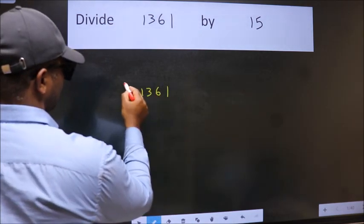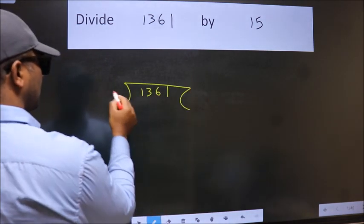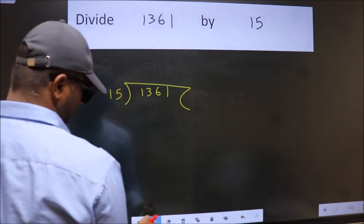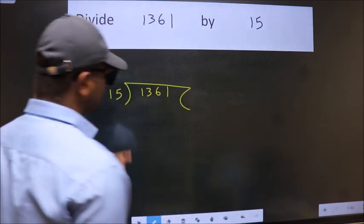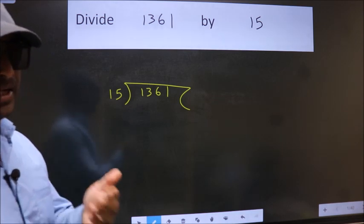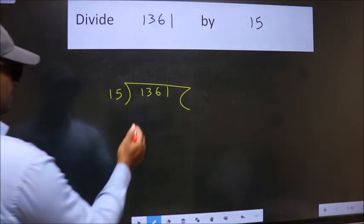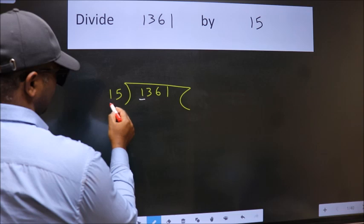1361 here, 15 here. This is your step 1. Next, here we have 1, here 15.